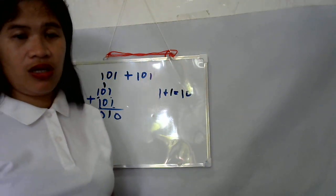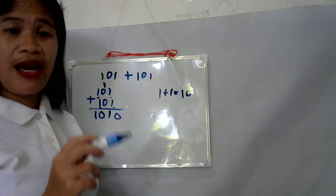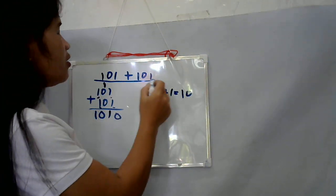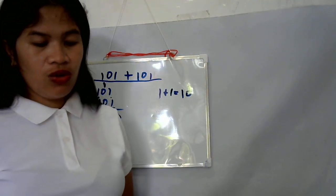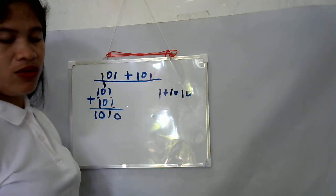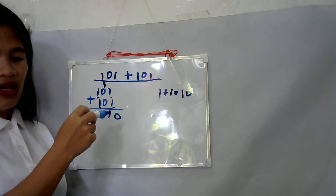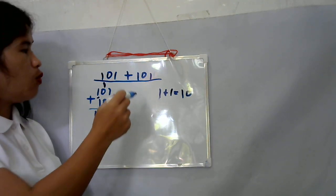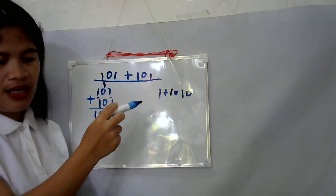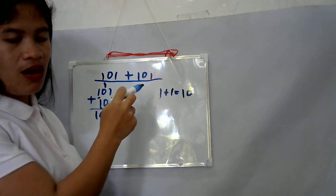When you cross-check the value with decimal value, the resultant value should be the same. The binary value of 101 here is equal to the value of